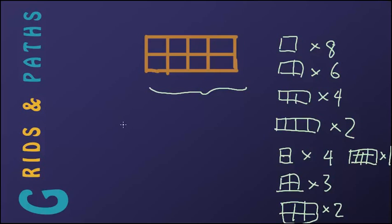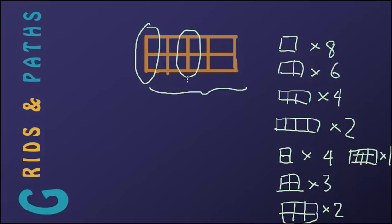Let's say we randomly choose a pair of vertical lines — say this one and this one. Each rectangle is made of a pair of vertical lines together with a pair of horizontal lines. So using this pair of vertical lines, how many rectangles or squares can be made? In other words, how many pairs of horizontal lines can be chosen? We have three horizontal lines.